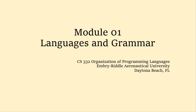What we talked about last time was what a language is — a definition for language. We talked about symbols, which are meaningless marks; alphabets, which are finite sets of symbols; strings, which are sequences of symbols; and a language, which is simply a set of strings.